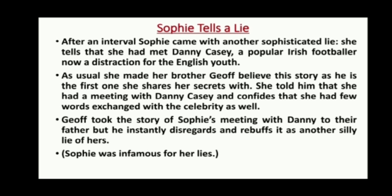Sophie tells a lie: after an interval, Sophie comes with another sophisticated lie. She tells that she had met Danny Casey, a popular Irish footballer. As usual, she made her brother Geoff believe this story, as he is the first one she shares her secrets with. She told him that she had a meeting with Danny Casey and confided that she had a few words in exchange with the celebrity as well. Geoff took this story of Sophie's meeting with Danny to their father, but he instantly disregarded and rebuffed it as another silly lie, as Sophie was infamous for her lies.